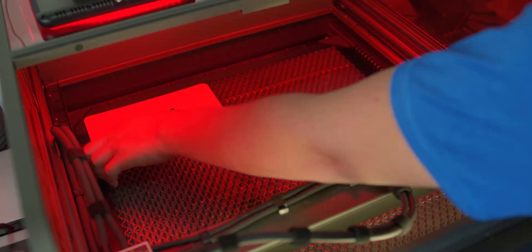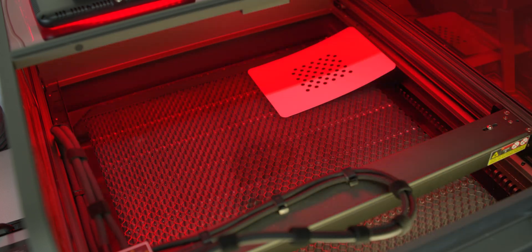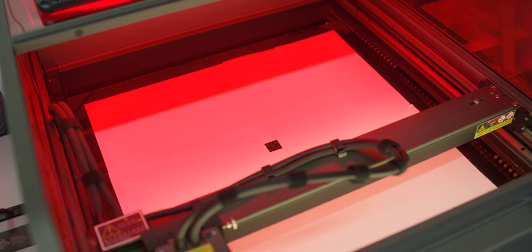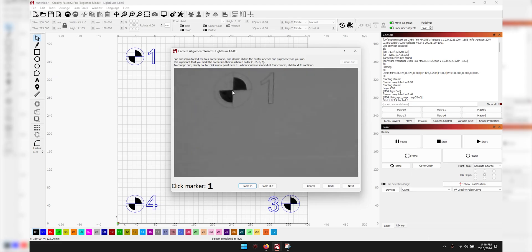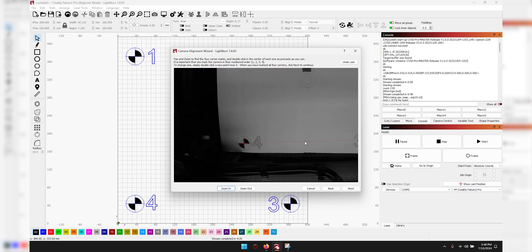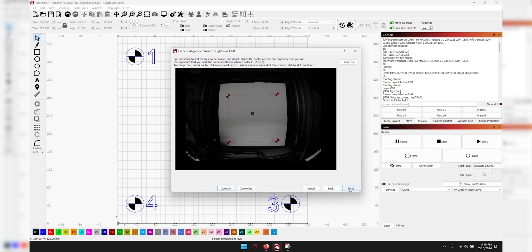After that's done, it'll want to run an alignment test, so I grabbed some regular leather paper so it could create the numbers and circles. After that's done, you'll connect all four corners in the center of the circle for an accurate result. Now the camera has been calibrated and you can see it in the Lightburn software, and you're now finally ready to start your first engraving.